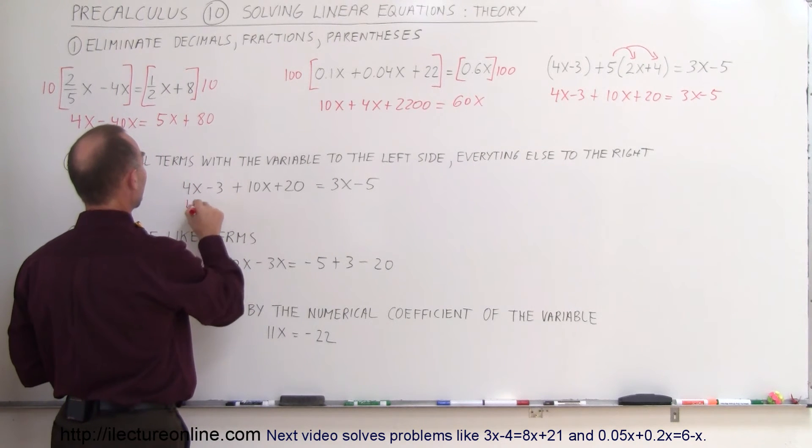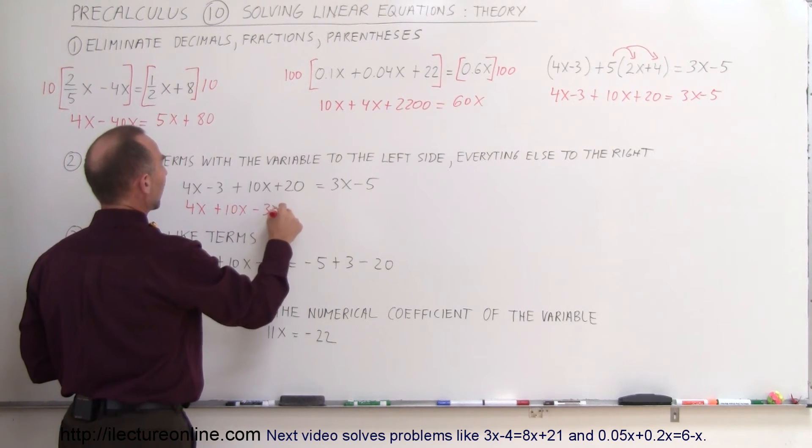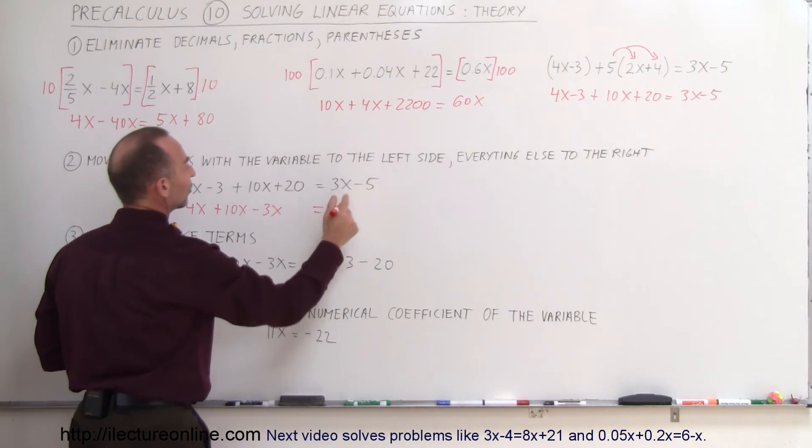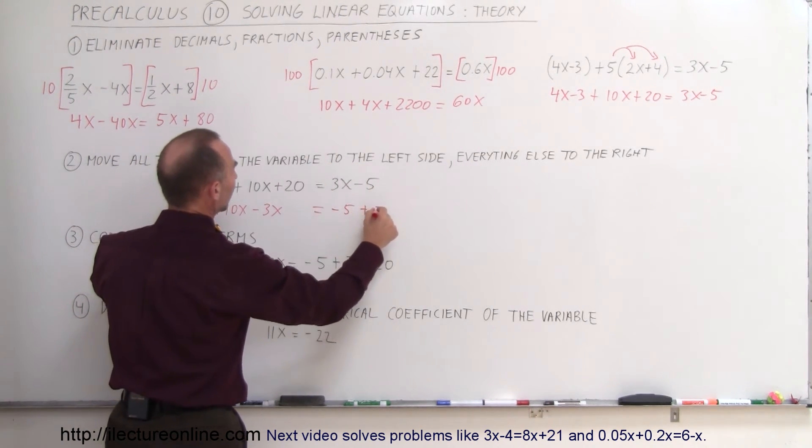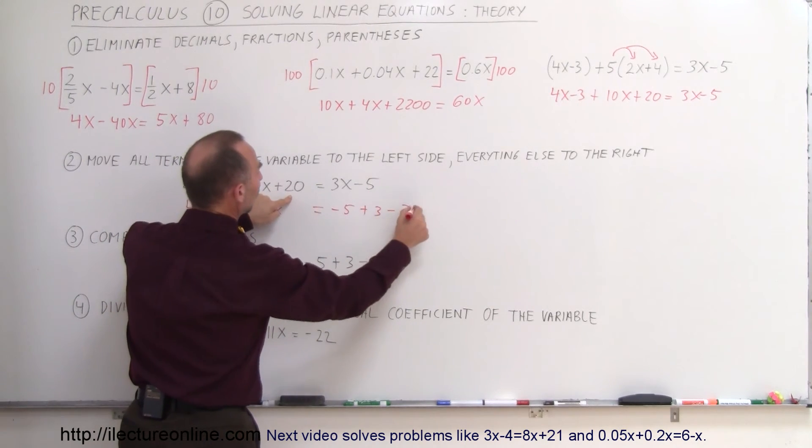So this becomes 4x plus 10x minus 3x equals, the minus 5 is already there. When you move the minus 3 across, that becomes a plus 3. When you move the plus 20 across, that becomes a minus 20.